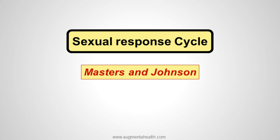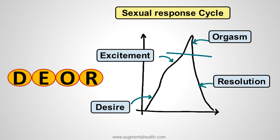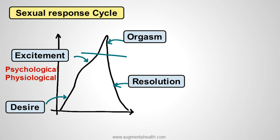Masters and Johnson described the sexual cycle with 4 phases, which can be easily remembered by the mnemonic DEOR: D stands for desire, E stands for excitement, O stands for orgasm, and R stands for resolution. When talking about excitement, it is important to remember it in 2 domains: physiological excitement as well as psychological excitement.